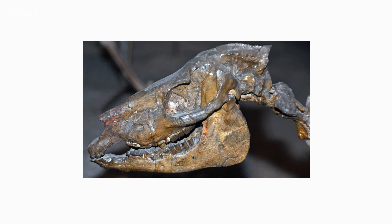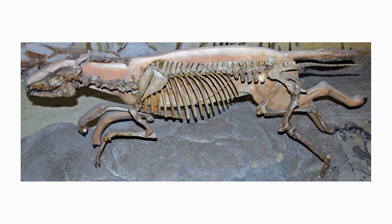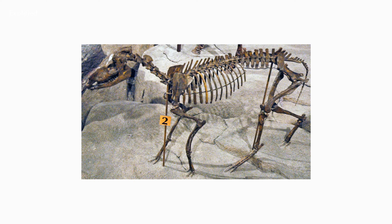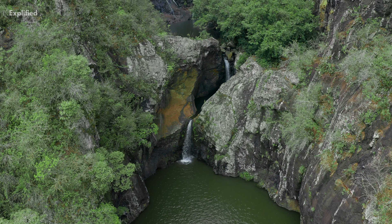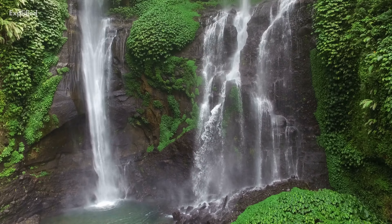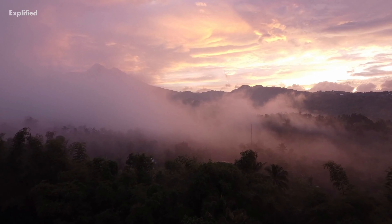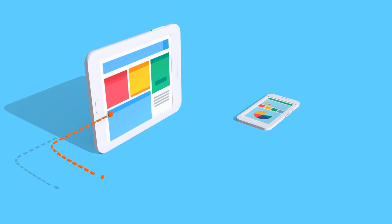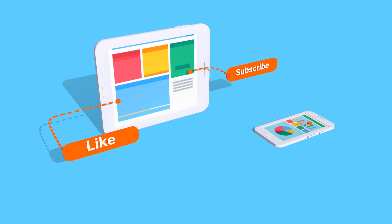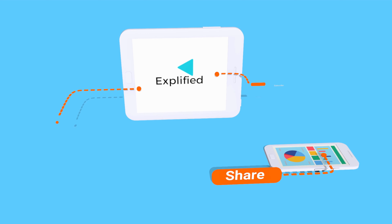The Oligocene can frequently be seen as a critical transition period, serving as a connection between the archaic world of the tropical Eocene and the more contemporary ecosystems of the Miocene. We hope you liked the video — subscribe to Explified for more interesting content, and let us know in the comments what you found most interesting.